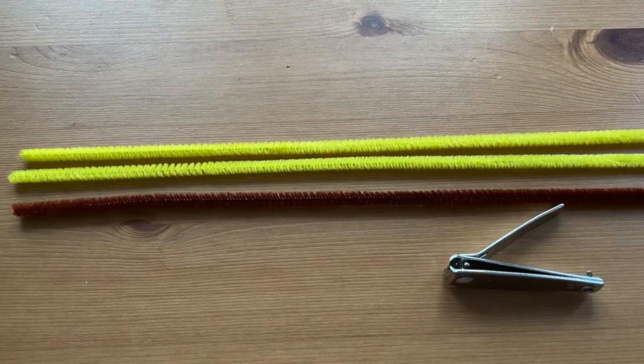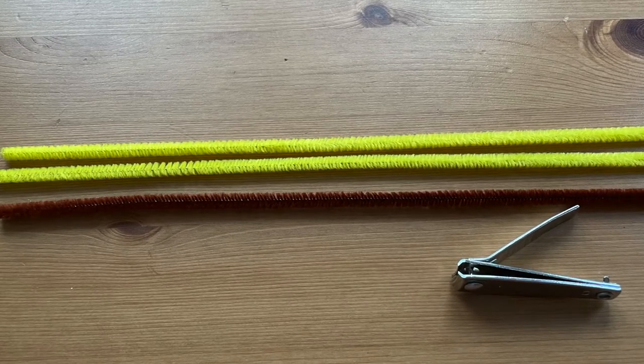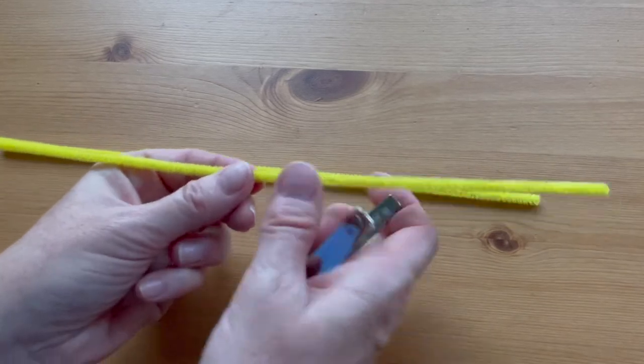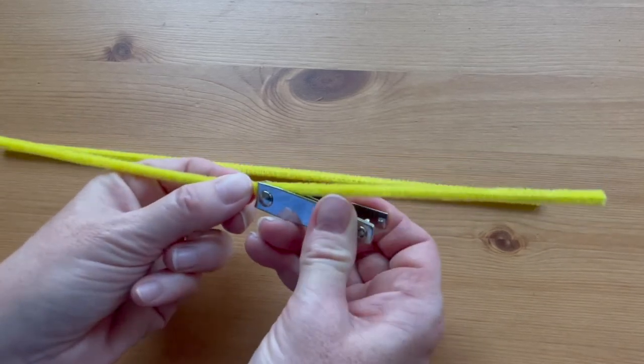For the bananas, you will need two yellow and one brown pipe cleaner and fingernail clippers. Cut the two yellow pipe cleaners in half. You will need three halves to make the bananas.